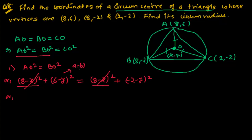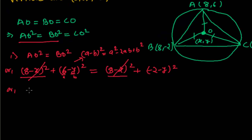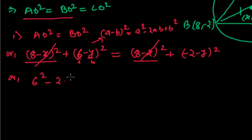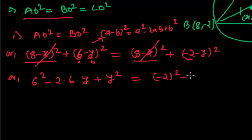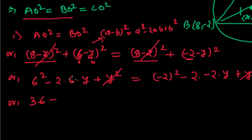Expanding using (a - b)² = a² - 2ab + b²: the left side gives 6² - 2(6)y + y², which is 36 - 12y + y². The right side gives (-2)² - 2(-2)y + y², which is 4 + 4y + y². The y² terms cancel.